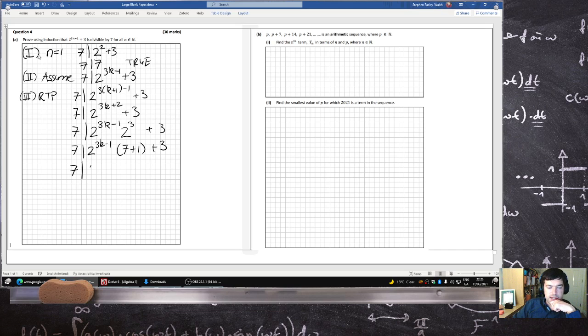Does 7 divide into 2 power 3k times 7 plus 2 power 3k minus 1? I'm just expanding here plus 3. Yeah okay.